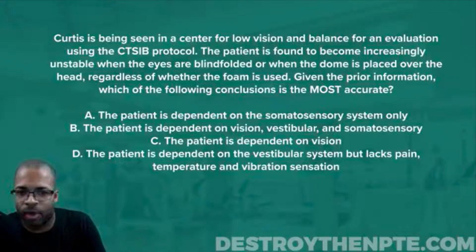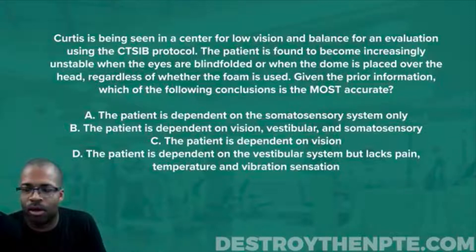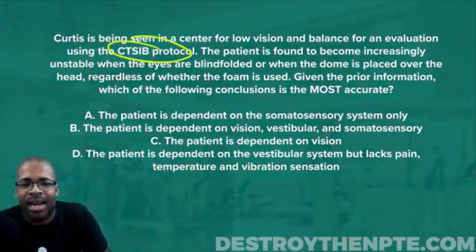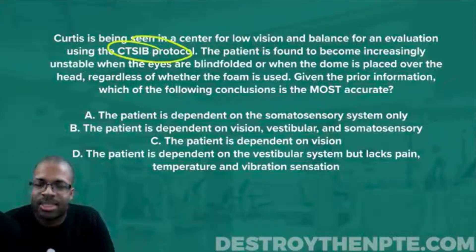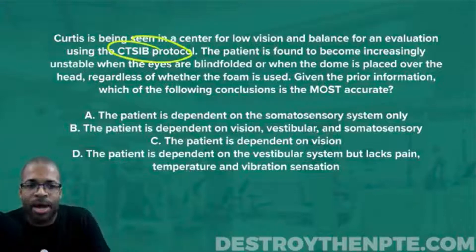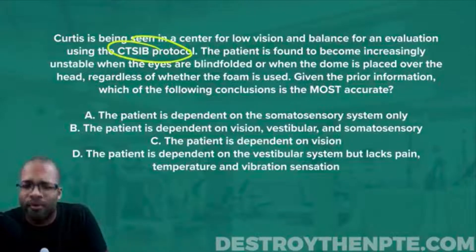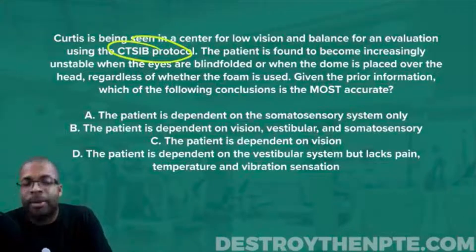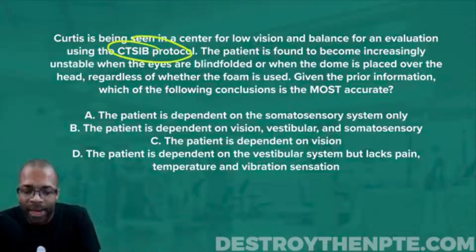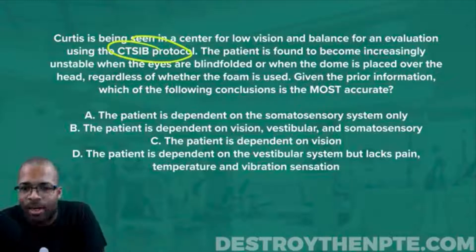Curtis is being seen in the center for low vision and balance using a CTSIB protocol. When you see CTSIB, you have to slow up and ask: what do we know about it? CTSIB stands for the Clinical Test for Sensory Interaction and Balance — you may know it as the foam and dome. We use it to determine which sensory system the patient is reliant upon for balance.